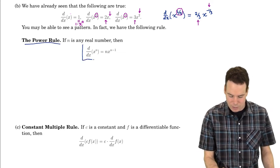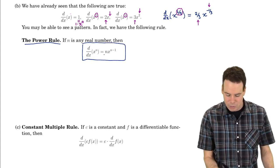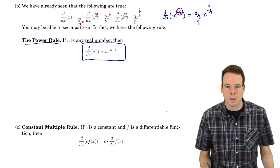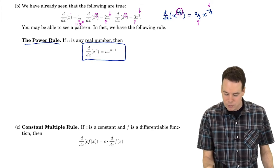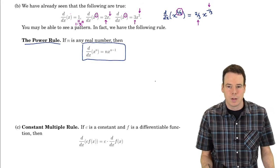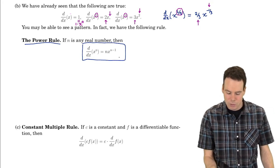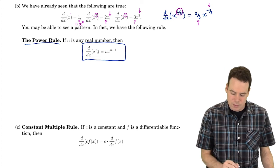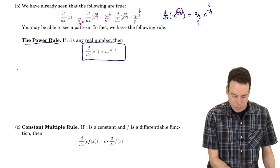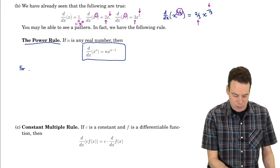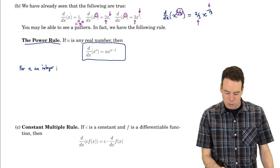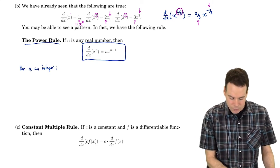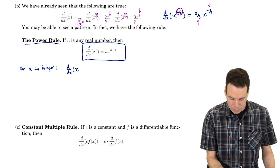The power rule says: if you have a power function x to the n and you want to compute its derivative, just move the exponent down front and take one away from it — giving n times x to the n minus 1. We got this from four examples, but that's not enough to justify why the rule is true for any possible power n. So I want to justify this for any power n. For now I'll be content with n being an integer, since it's slightly more complicated when n is not an integer.